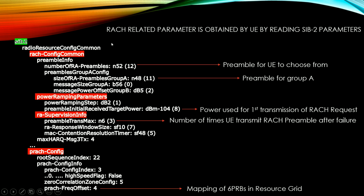Now we can see the RACH-related parameters which are obtained by the UE by reading the SIB2 parameters. SIB2 contains the RACH-related parameters. You can see the parameters present in SIB2 like radio resource configuration common, RACH config common, preamble information, number of RA preamble, preamble group, size of RA preamble, message size, power ramping, RA supervision information, and PRACH config. These are all the SIB2 information required for RACH.